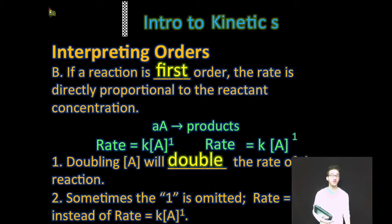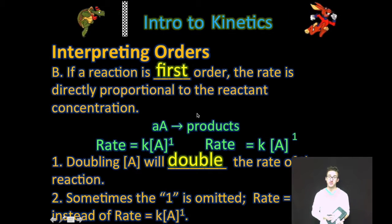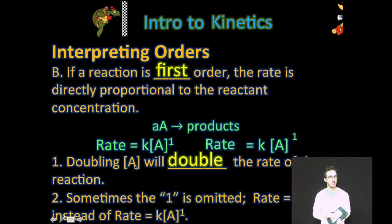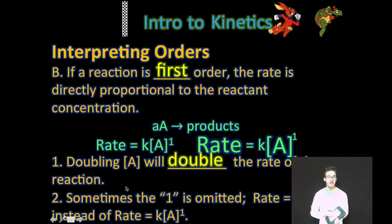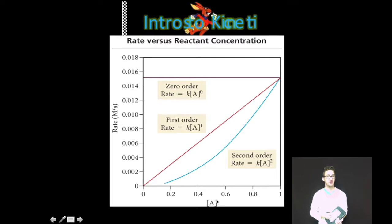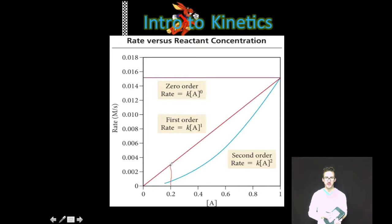If a reaction is first order, the rate is directly proportional to the reactant concentration. We express that by writing the concentration of our reactant A raised to the power of one. Recognize that doubling the concentration of A will double the rate of the reaction. Sometimes the one is omitted for clarity. As you take a look at this graph of rate against concentration for a first order reaction, when I double my concentration — going from 0.2 molar to 0.4 molar — the rate doubles from 0.003 molarity per second to 0.006 molarity per second.